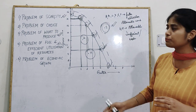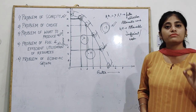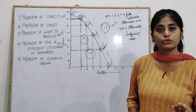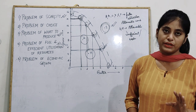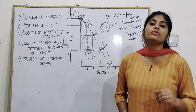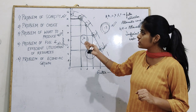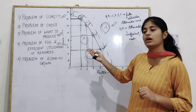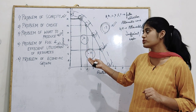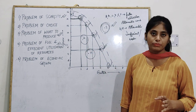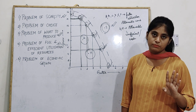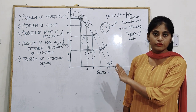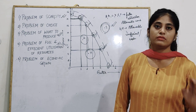Hope this is clear to you all. All five problems — problem of scarcity, problem of choice, problem of what to produce, problem of fuller and efficient utilization of resources, and problem of economic growth — you have to draw the PPC curve and show the correct points with explanation. Thank you.